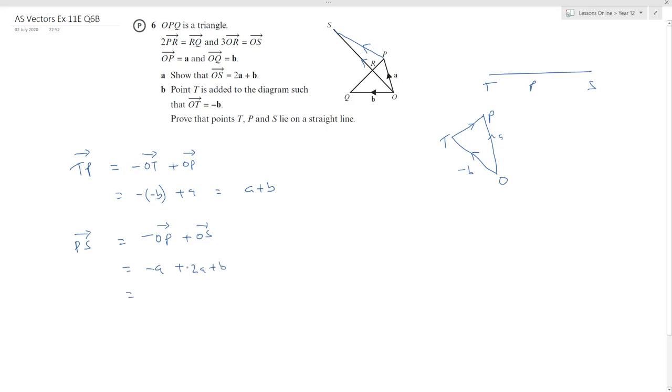So TP is equal to PS. Because they're both equal to A plus B, that tells us that they're parallel. But I need to show that the points lie on a straight line.